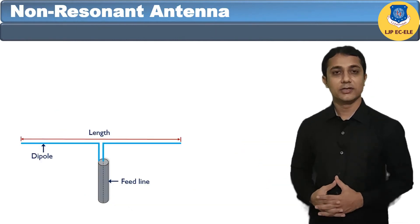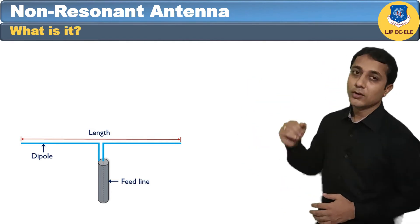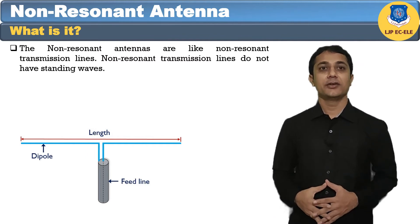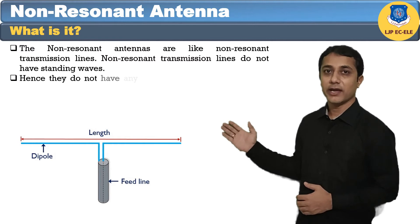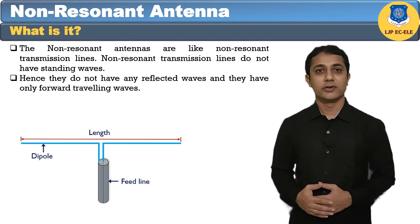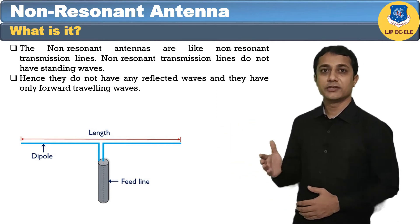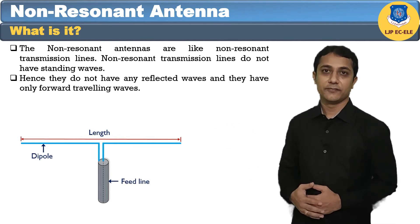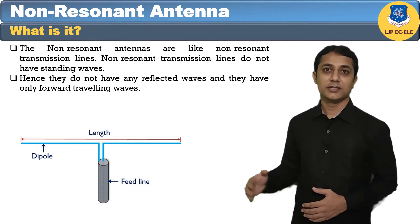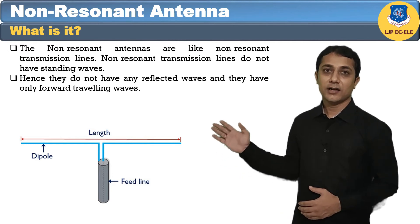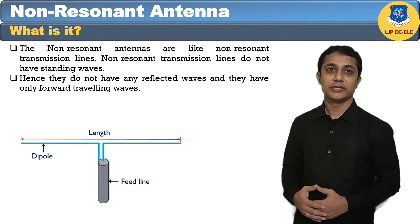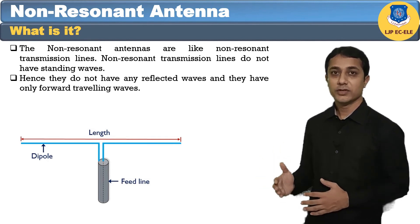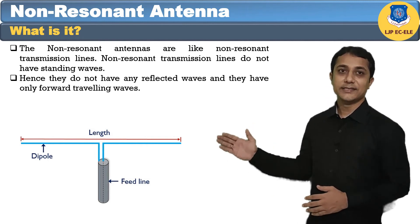Now let's see the second type: the non-resonant antenna. The non-resonant antenna is unlike a non-resonant transmission line — non-resonant transmission lines do not have standing waves, hence they do not have any reflected waves and have only forward traveling waves. Non-resonant antennas are those for which resonant frequency does not occur. The waves move in the forward direction and hence do not form any standing wave. The radiation pattern of the radiated wave matches with the load impedance in the non-resonant antenna. These antennas are non-periodic in nature and are also called unidirectional traveling wave antennas, as the radiated wave moves only in the forward direction, meaning only the incident wave is present.